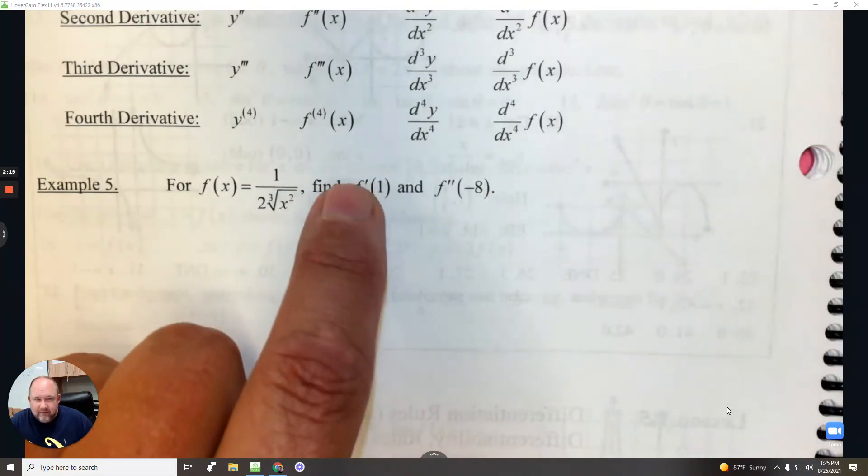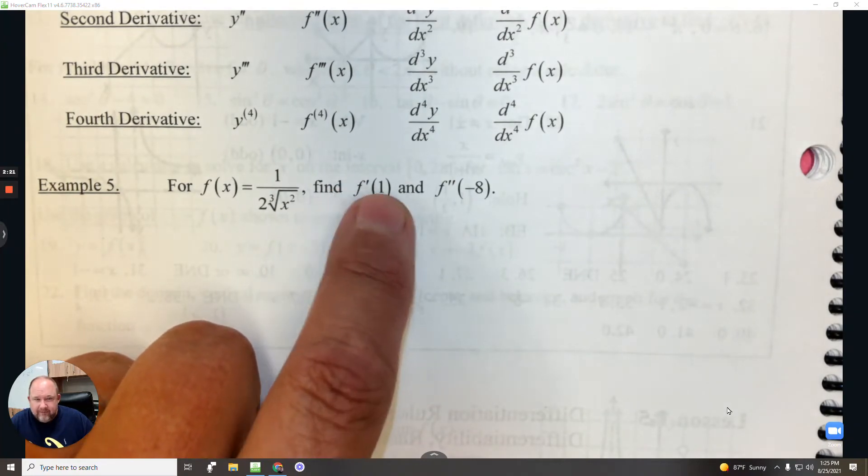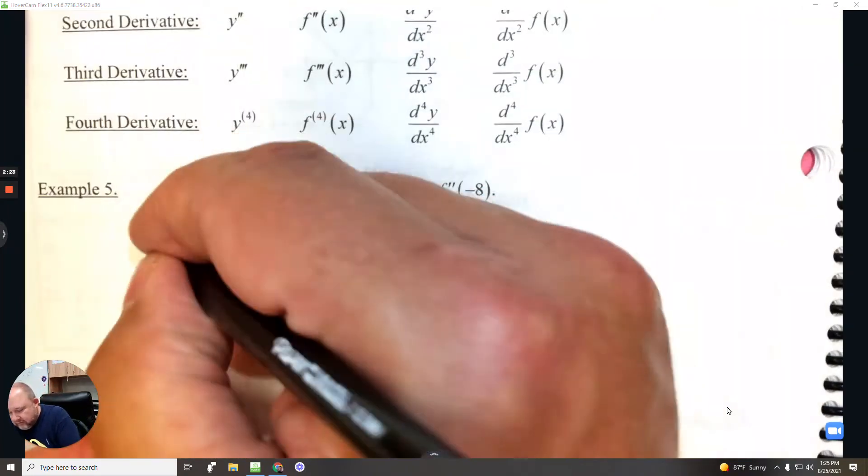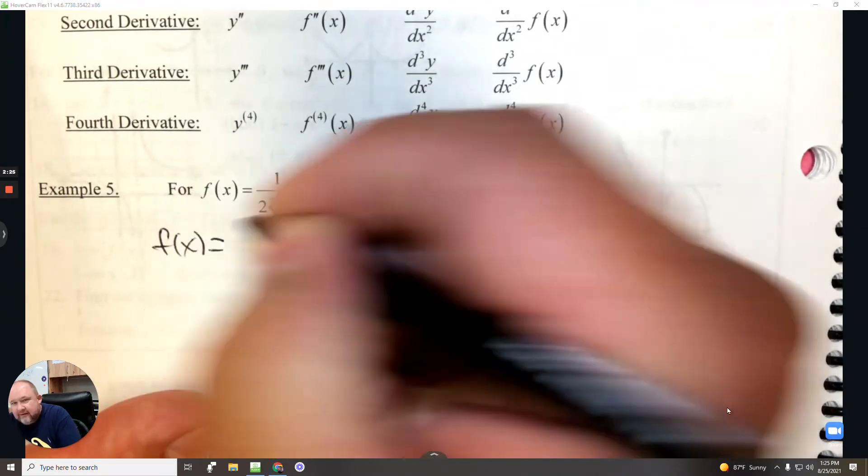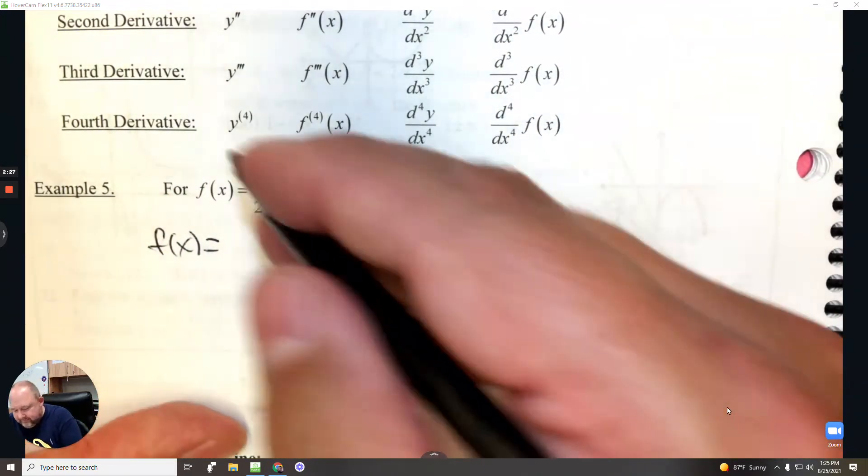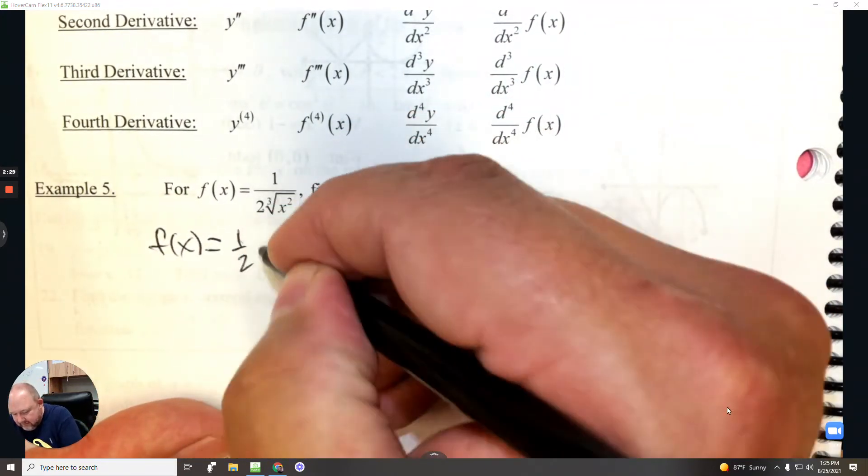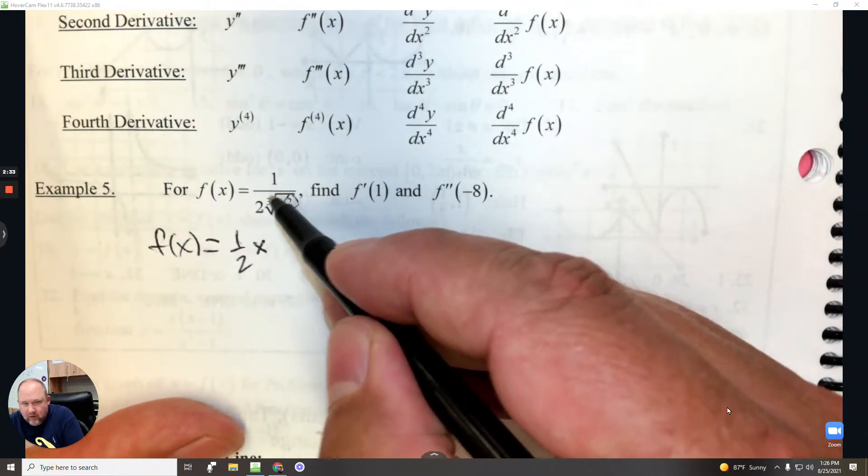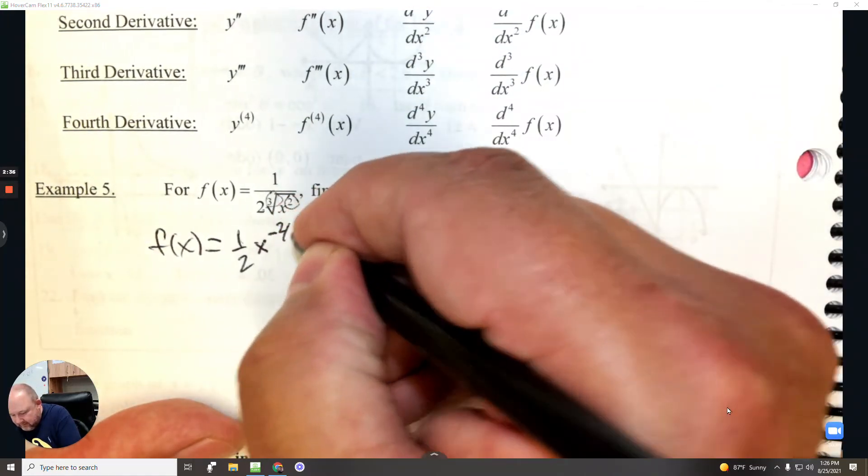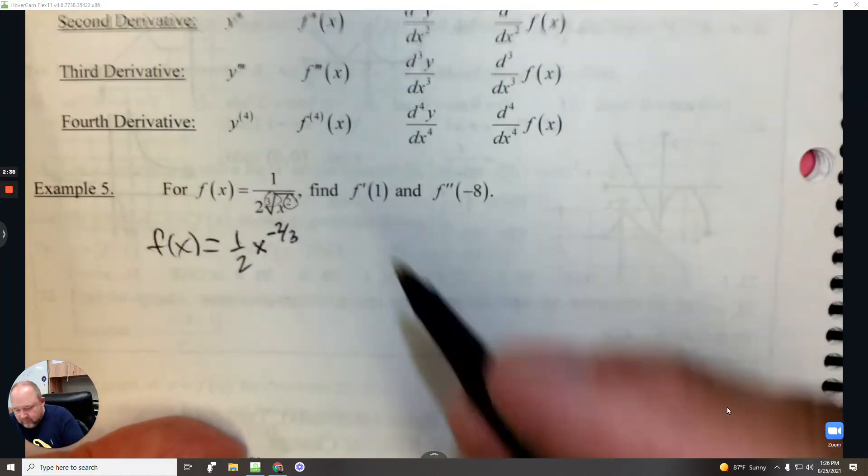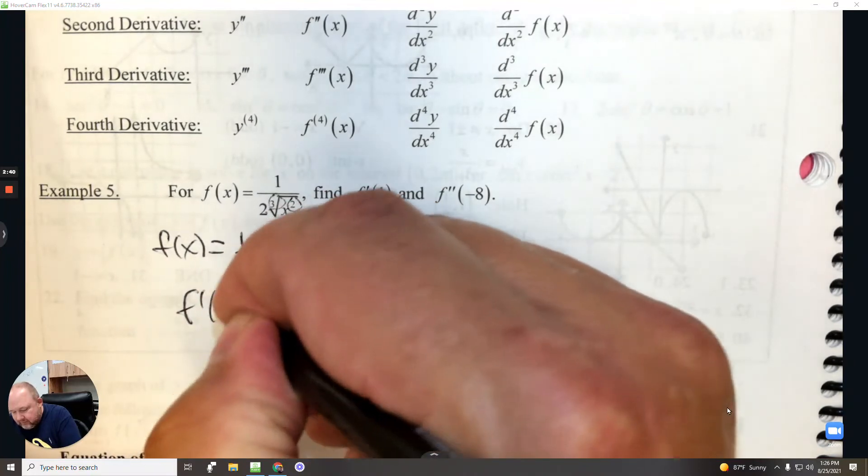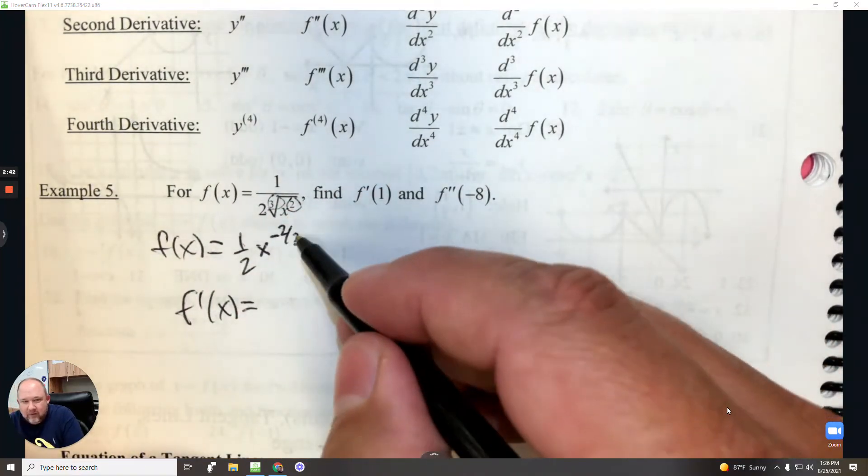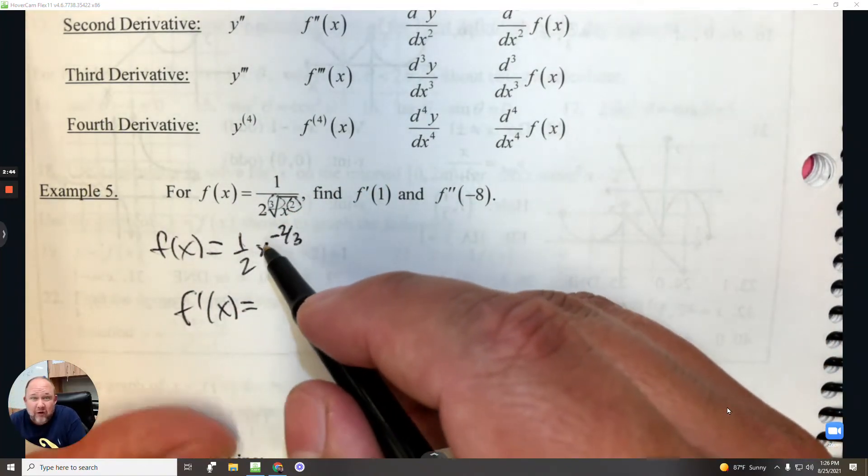The question here is to find the first derivative and evaluate at 1. So the first step here is to write it calculus friendly, so that's 1 half, but the exponent would be 2 over 3, but because it's in the denominator, it's negative 2 over 3.